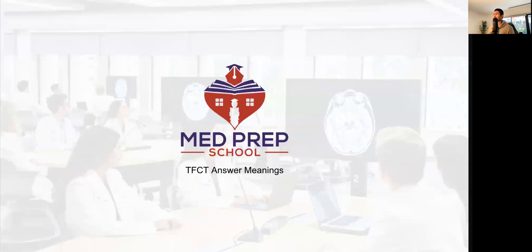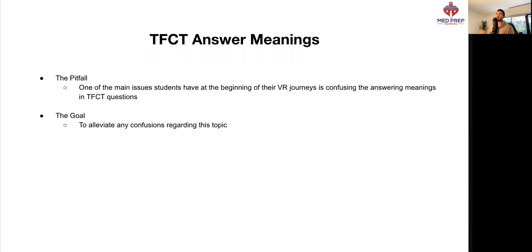Welcome back, champions, to the beginning of skill development for verbal reasoning. Today, we're going through the meanings of true, false, and can't tell. One of the main issues students have right at the beginning of their verbal reasoning journeys is confusing the answer meanings in the TFCT question. So the goal of today's class is to alleviate any confusion regarding this topic.